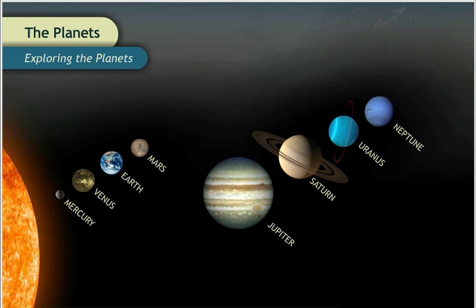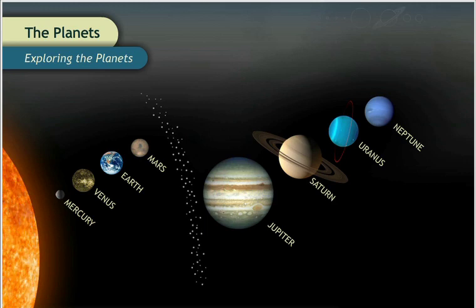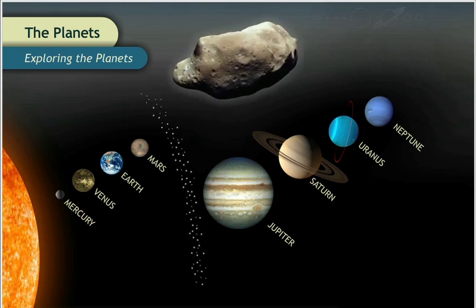The inner planets and the outer planets are separated by an asteroid belt, which is made up of thousands of rocky boulders.